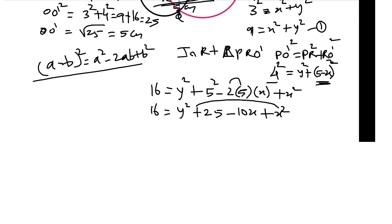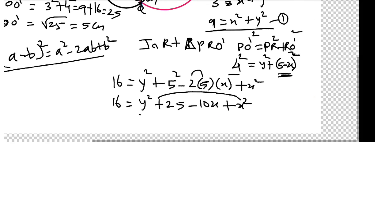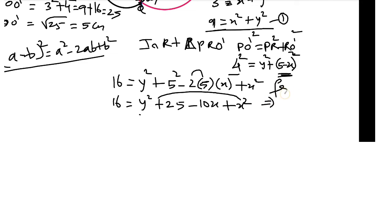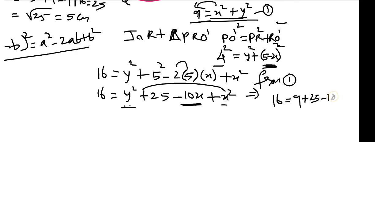16 equals y square plus 5 square minus 2 into 5 into x plus x square. So 16 equals y square plus 25 minus 10x plus x square. Now x square and y square equals 9 from equation 1.